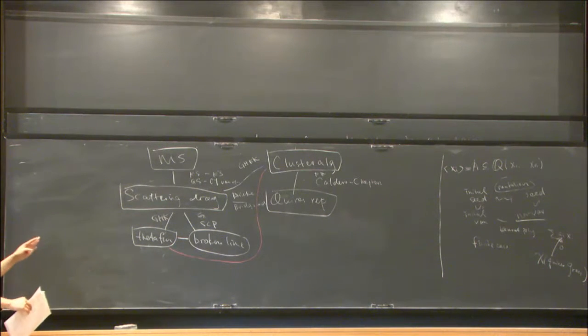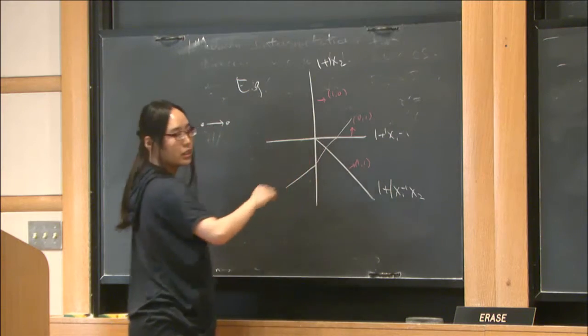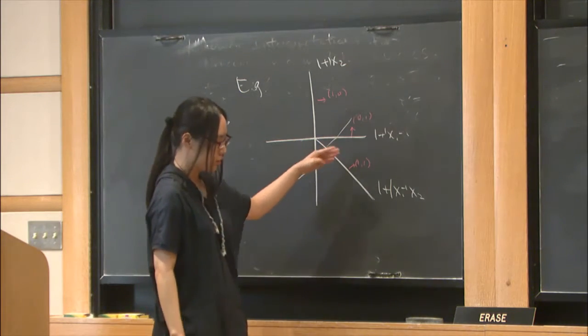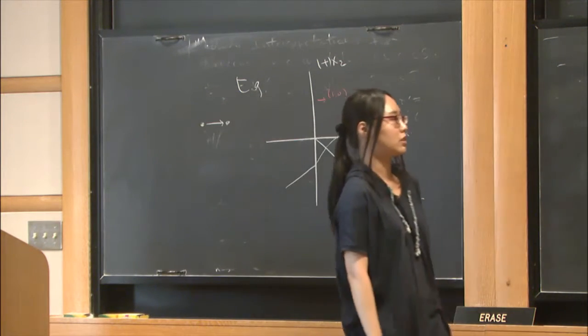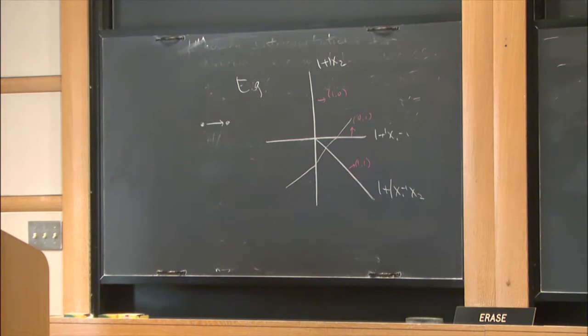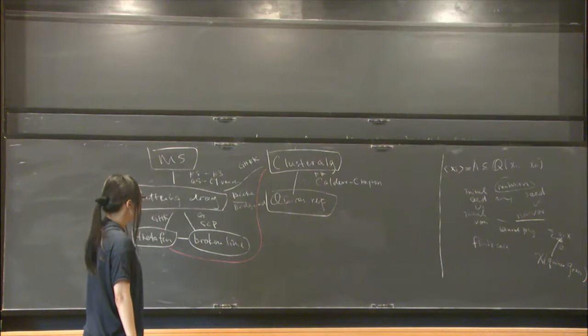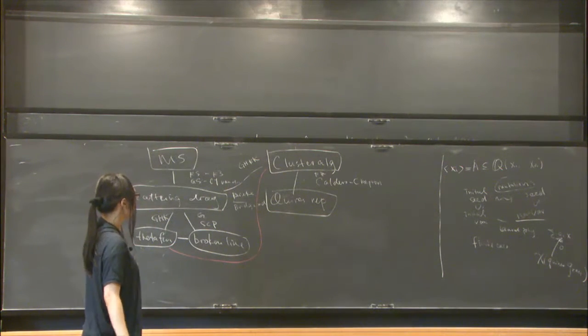But what the GHKK construction did more is they figured out that the theta function is actually the cluster variable. And somehow the theta function, actually, in terms of the scattering diagram language, can be constructed by the Buchennei. And here, the construction of a Buchennei in the diagram, as the name tells, is a line which is broken. That is, it only bends over the wall. And somehow the bending here, we only have the coefficient is positive. And so they prove the positivity conjecture in this cluster algebra setting.